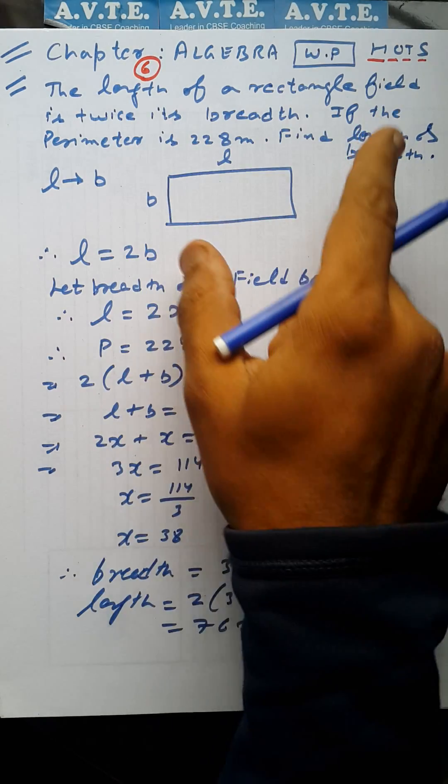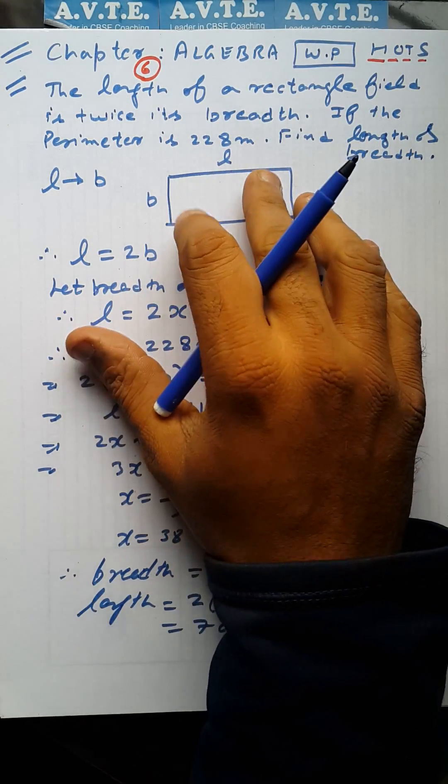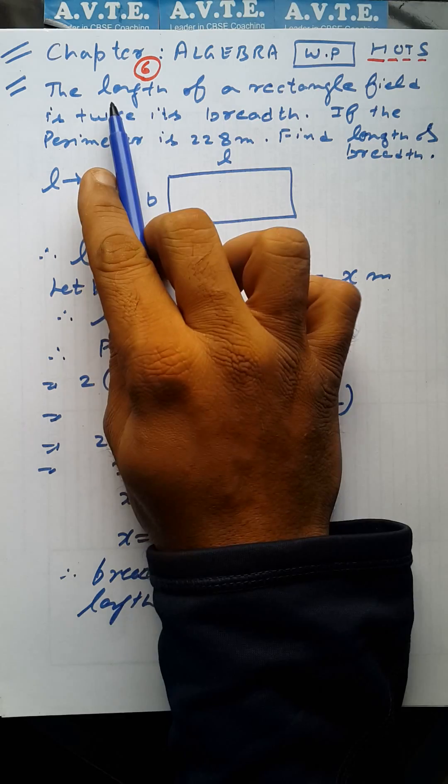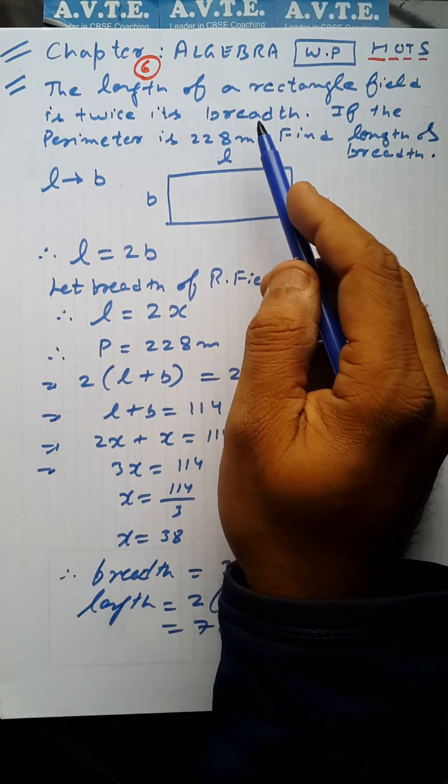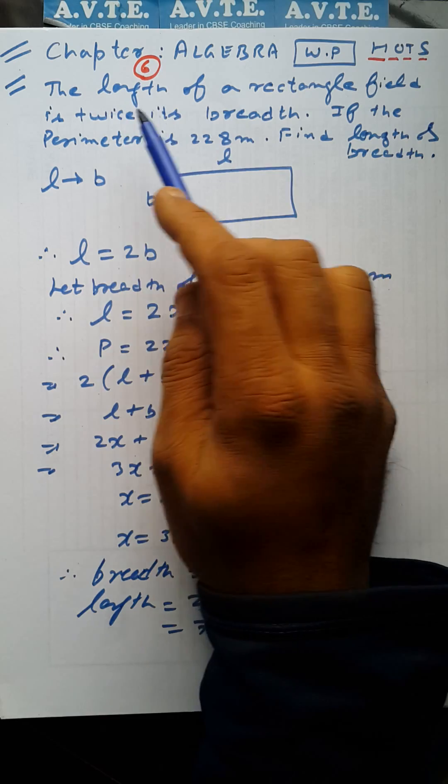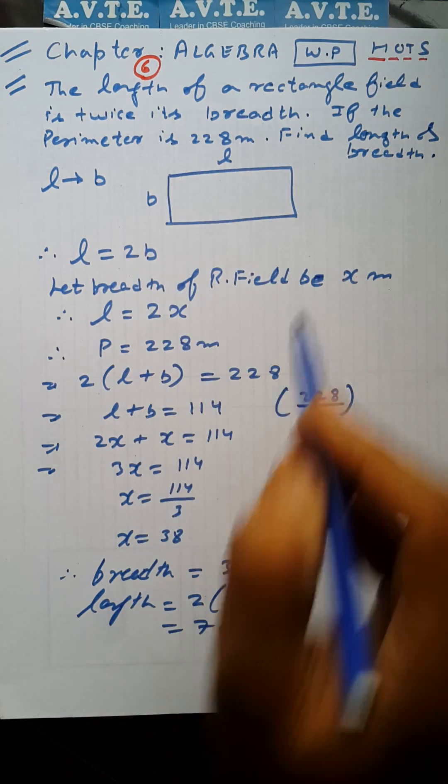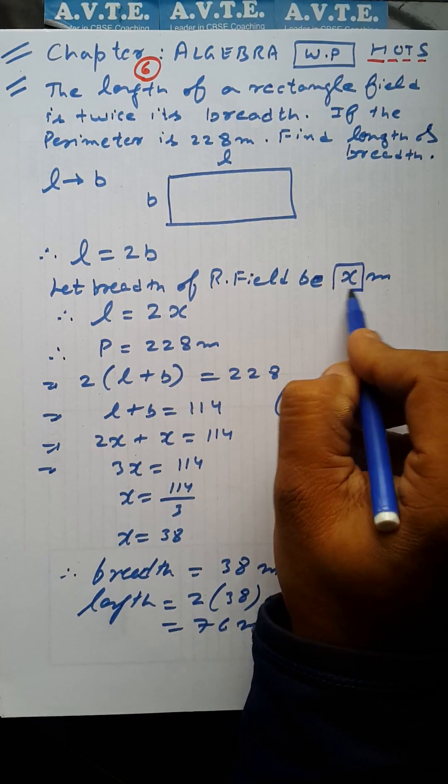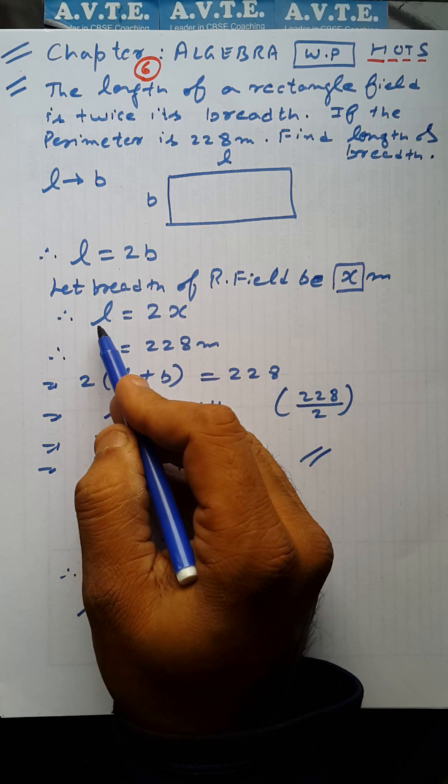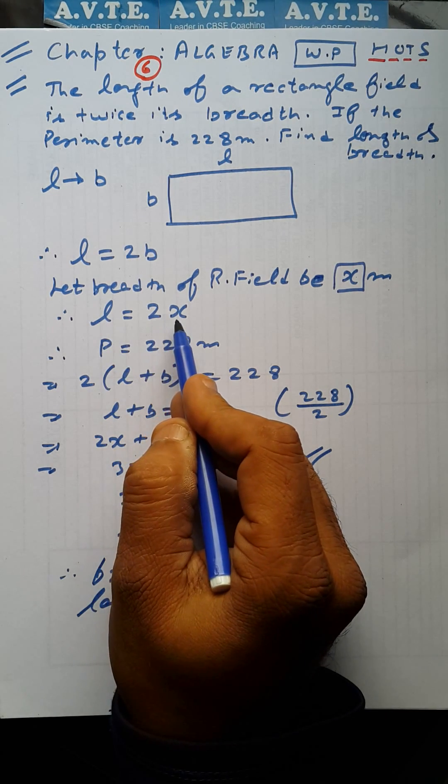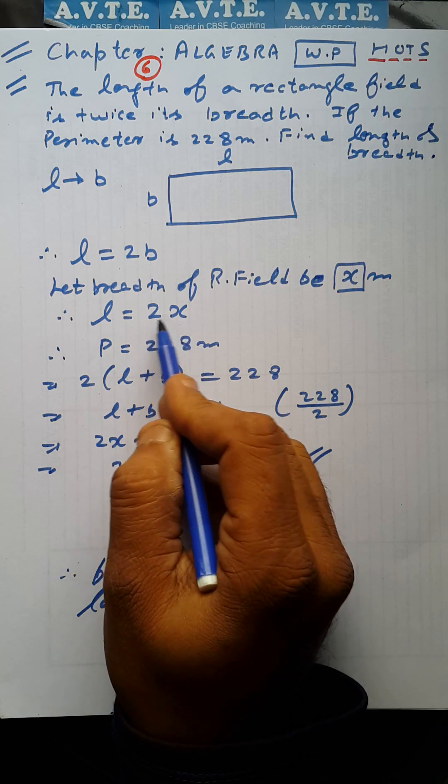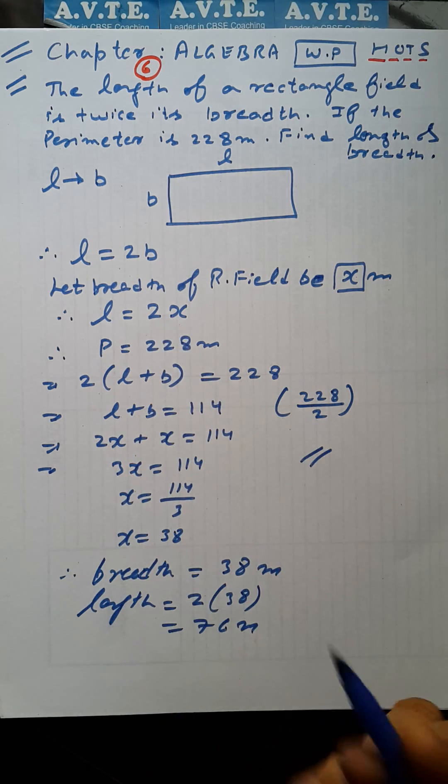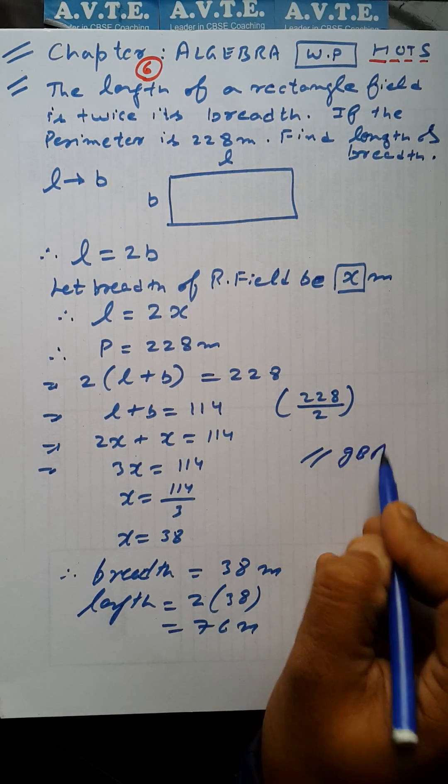In this question, I repeat again, length is dependent upon breadth. And in every video I say, if we are dependent upon breadth, you have to let breadth as x and length is twice of breadth, that is twice of x, that is 2x. Got it? God bless you all.